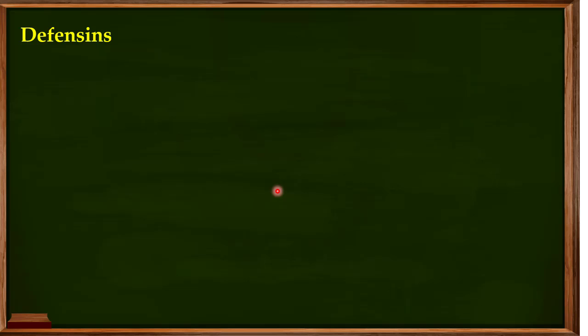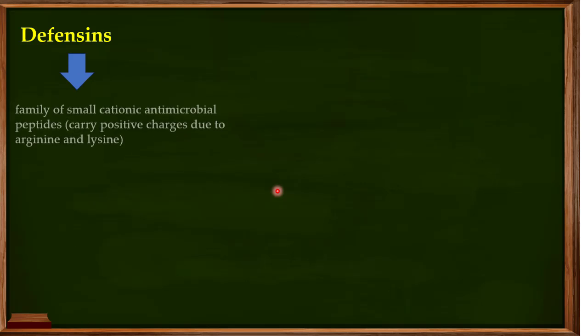In this video I want to focus on another important component of the primary granules: the defensins. Defensins are a family of small cationic antimicrobial peptides. When I say they are cationic, that means they carry positive charges due to the presence of arginine and lysine amino acids in the defensin proteins.